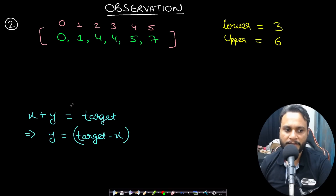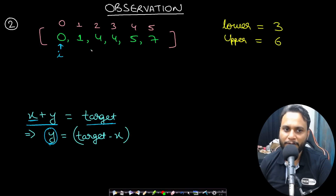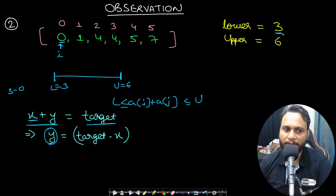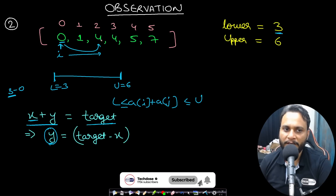The second observation is: if you want to add two items to reach a target, y = target - x. If you fix the ith item, you want to find the start and end of the valid range for j. The start of the range corresponds to lower (3 in our case) and the end corresponds to upper (6). If the first value is 0, the other item must be at least 3-0=3. The first item greater than or equal to 3 is the start of the range. You could iterate one by one, but that's still O(n) per element.